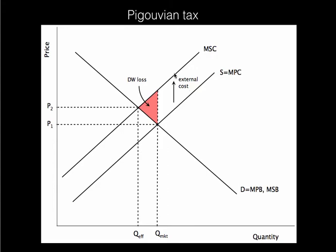that right amount would be exactly the size of this external cost that's being imposed per unit. So if we tax them per unit by that amount — what's called a Pigouvian tax, after a guy named Pigou — that would be shifting their supply curve, adding to their private costs. We're just adding another cost to their production by the amount of that tax, so if we shift that supply curve onto this marginal social cost curve, then that would give them the right incentive in terms of their production. They're going to be accounting for all of the costs of their production by having to pay that tax.